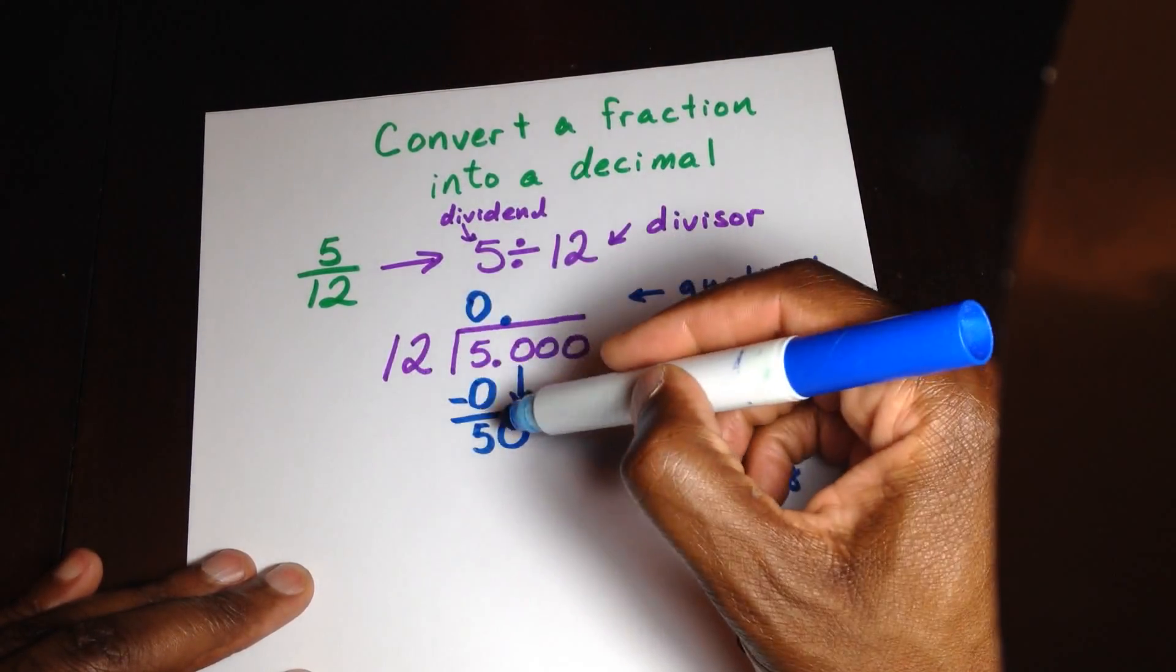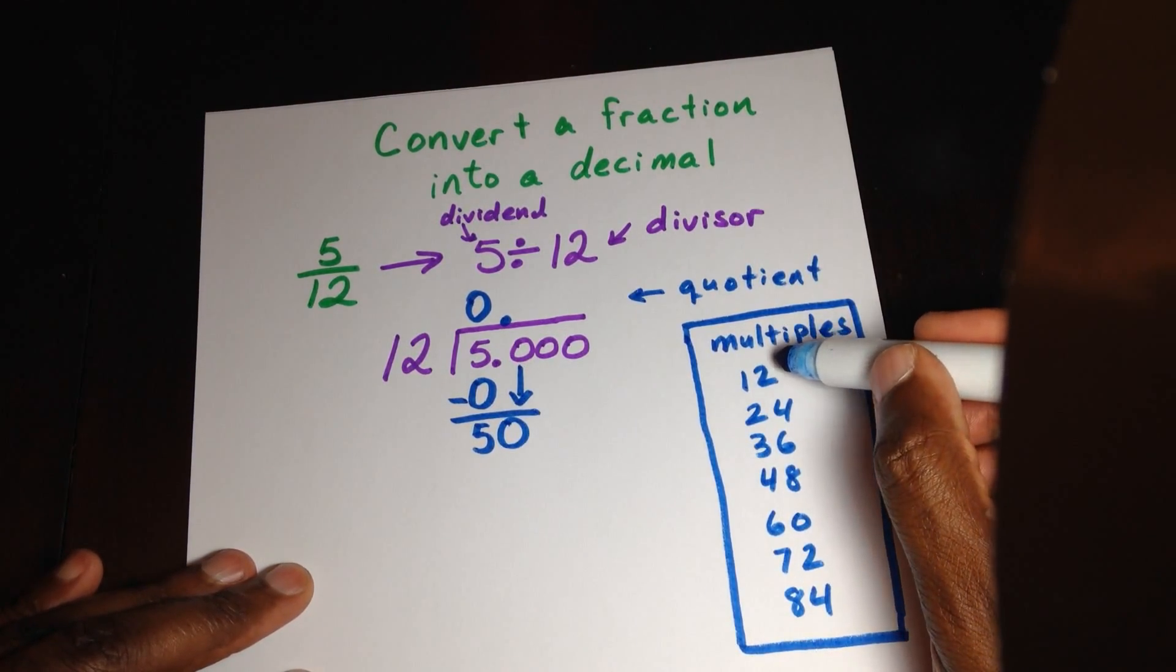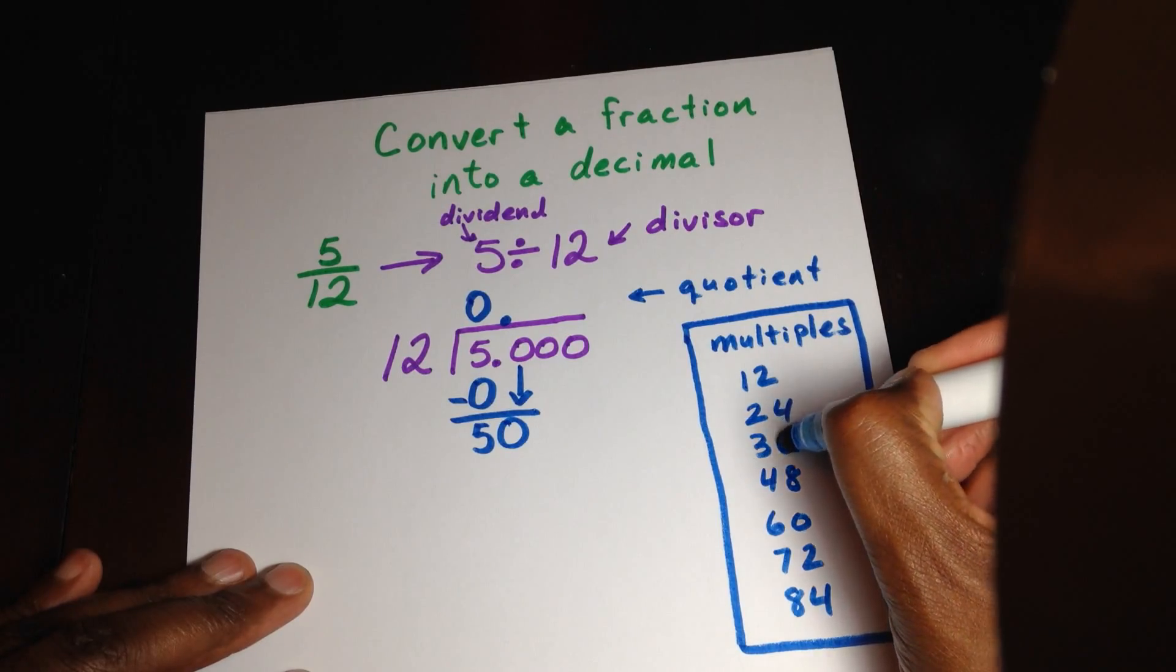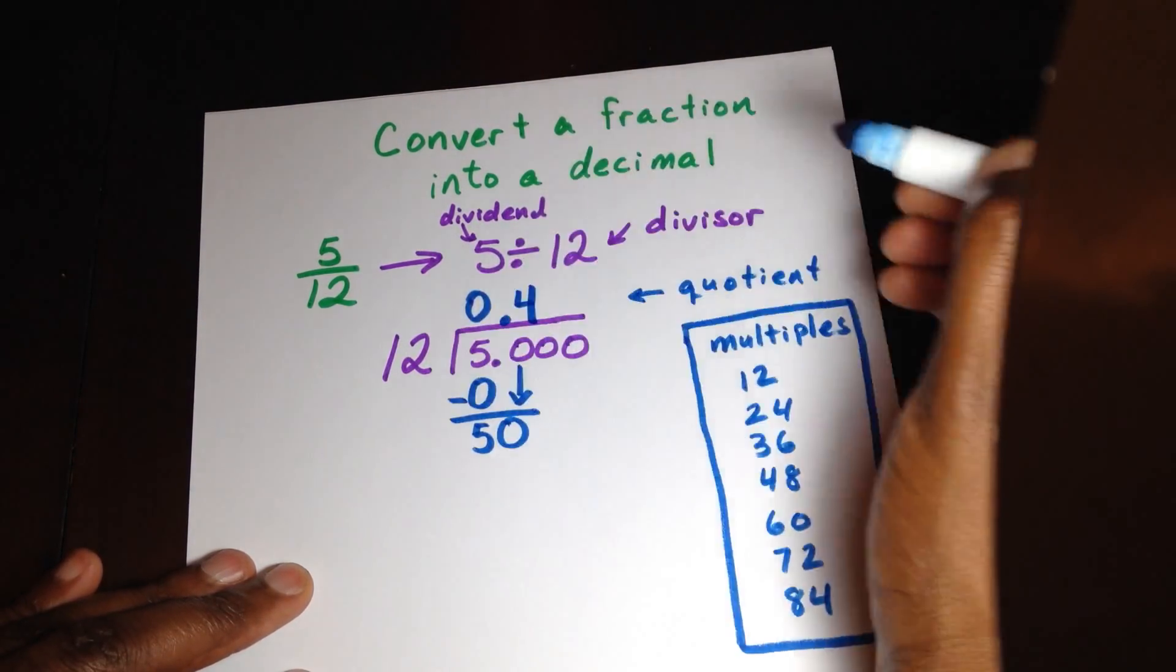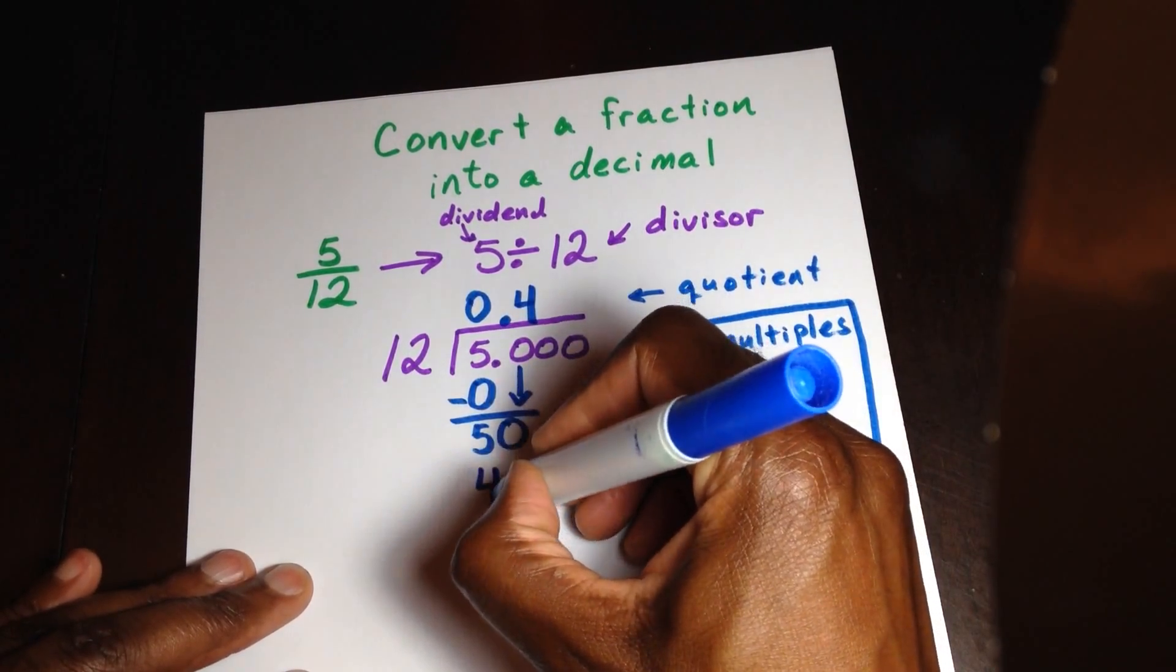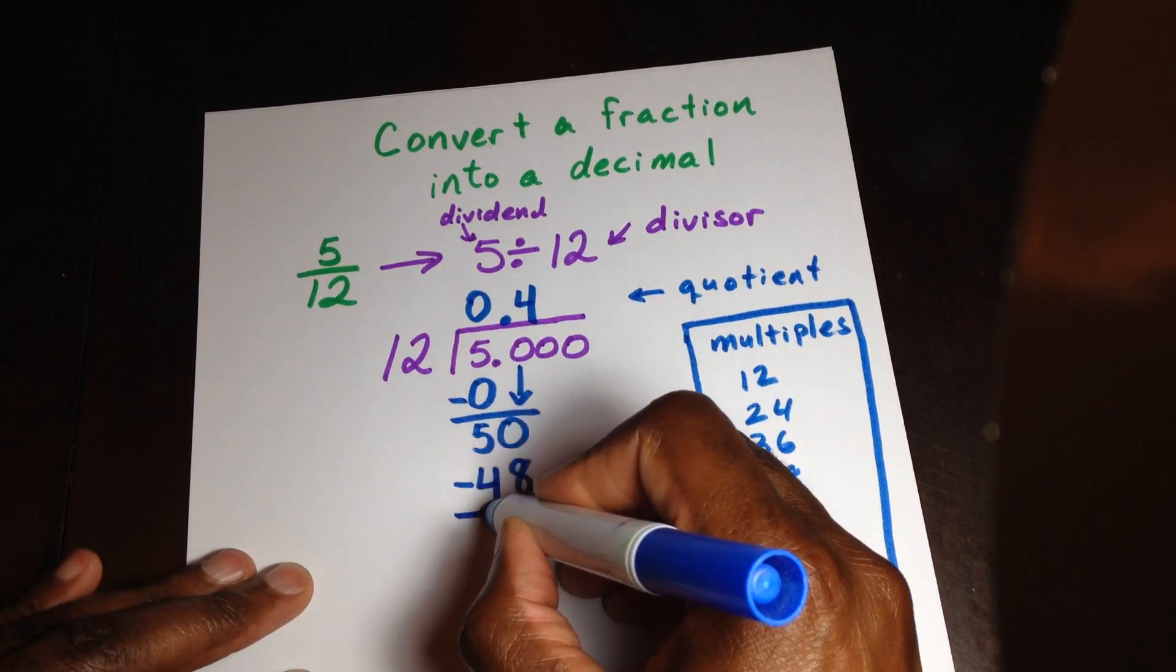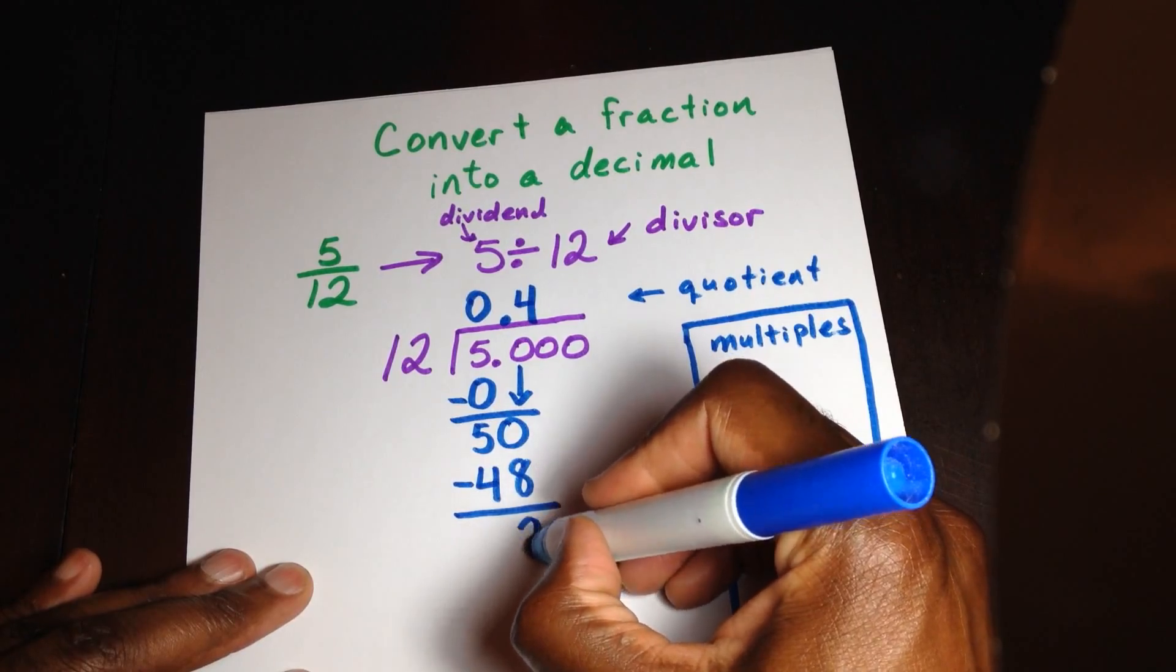So we want to see how many sets of 12 can go into 50. Well, when I look at my multiples, I see the closest number that goes to 50 without going over is 48. So now that's going to be 1, 2, 3, 4 sets. So I put a 4 here and then the 4 multiples of 12 is going to be 48. I put the 48 here, that's what's going to be subtracted. So I do 50 take away 48, and that gives me 2.